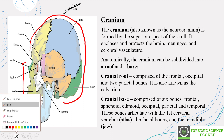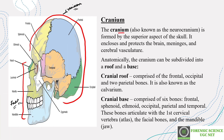The cranium is also known as the neurocranium. It is formed by the superior portion of the skull and it encloses and protects the brain. Anatomically we can categorize cranium bones into two parts: the roof and the base. Let's look at what bones come under the cranial roof and cranial base.